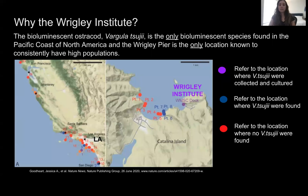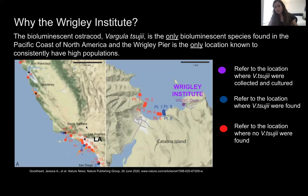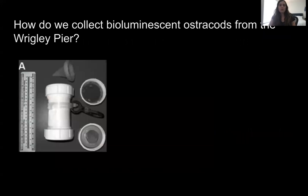The bioluminescent ostracod Vargula sugii is the only bioluminescent species found on the Pacific coast of North America, and the Wrigley Pier is the only location known to consistently have high populations. A paper by postdoc Jessica Goodhart found that the highest abundances occur next to the Wrigley Pier. Blue points on the map indicate locations where Vargula sugii were found but not cultured, and red dots indicate locations where no Vargula sugii were found. Wrigley is amazing for this research because you have copious amounts of Vargula sugii and also non-luminescent species for use as outgroups in phylogenetic analysis.